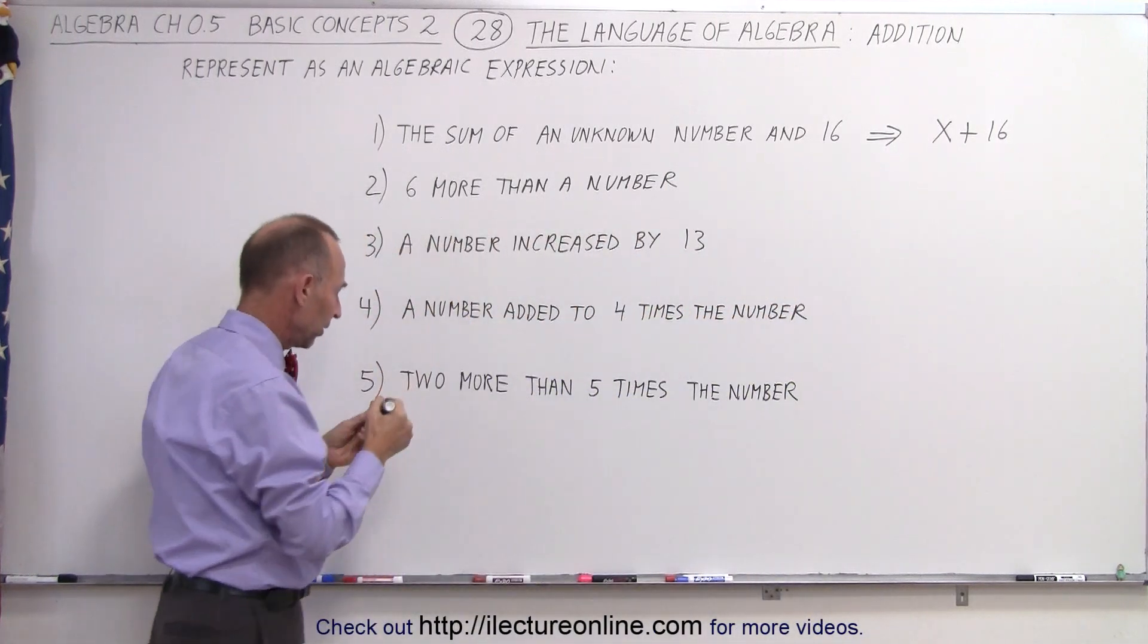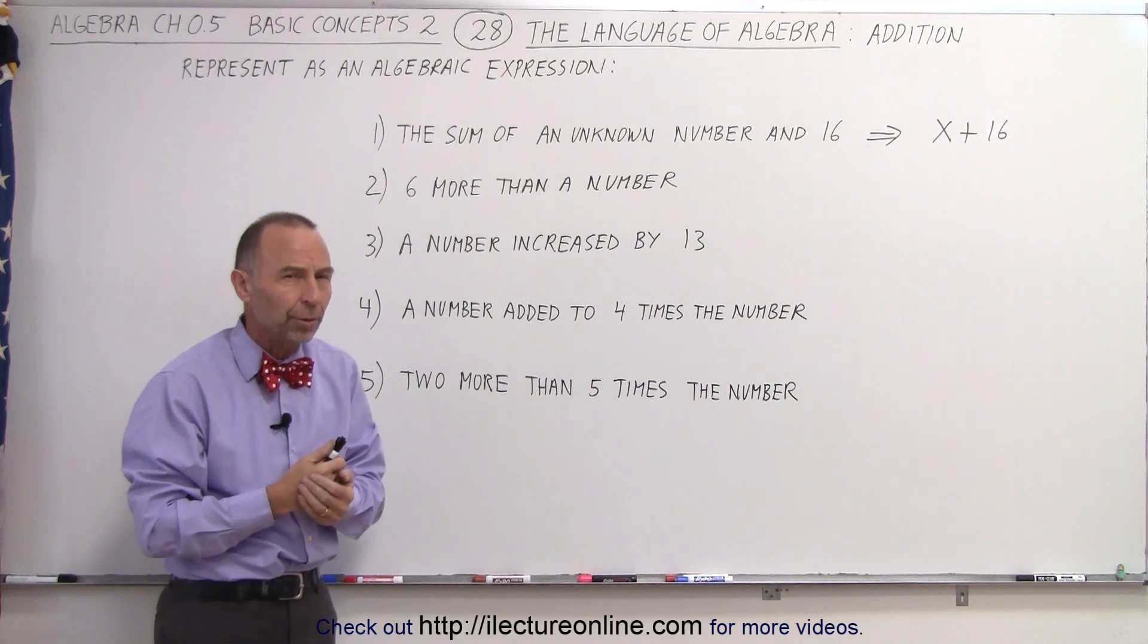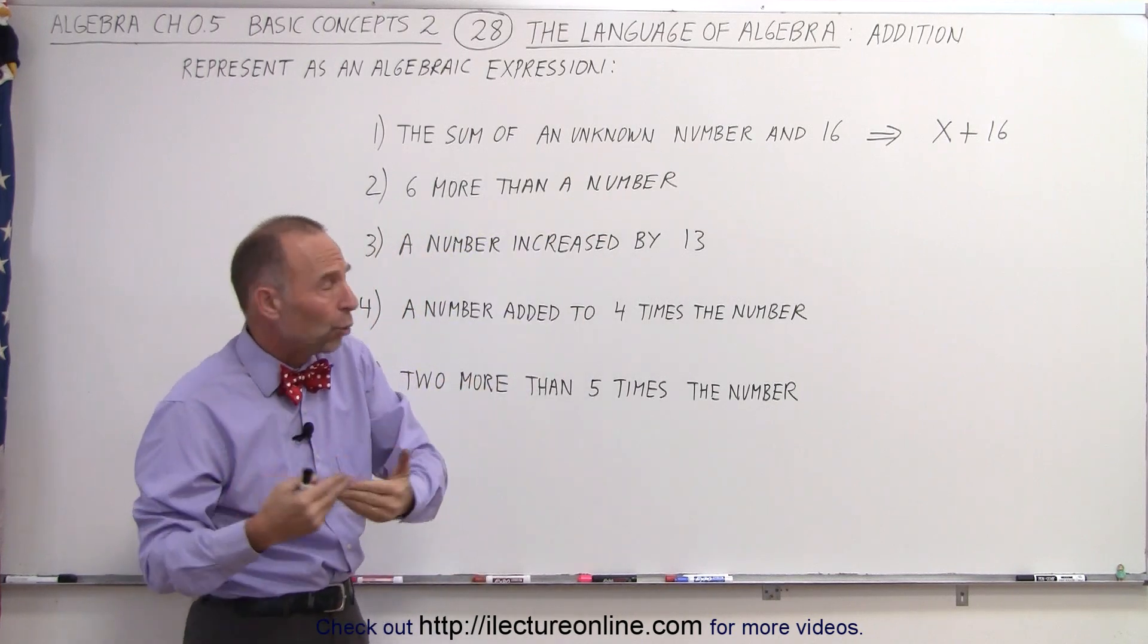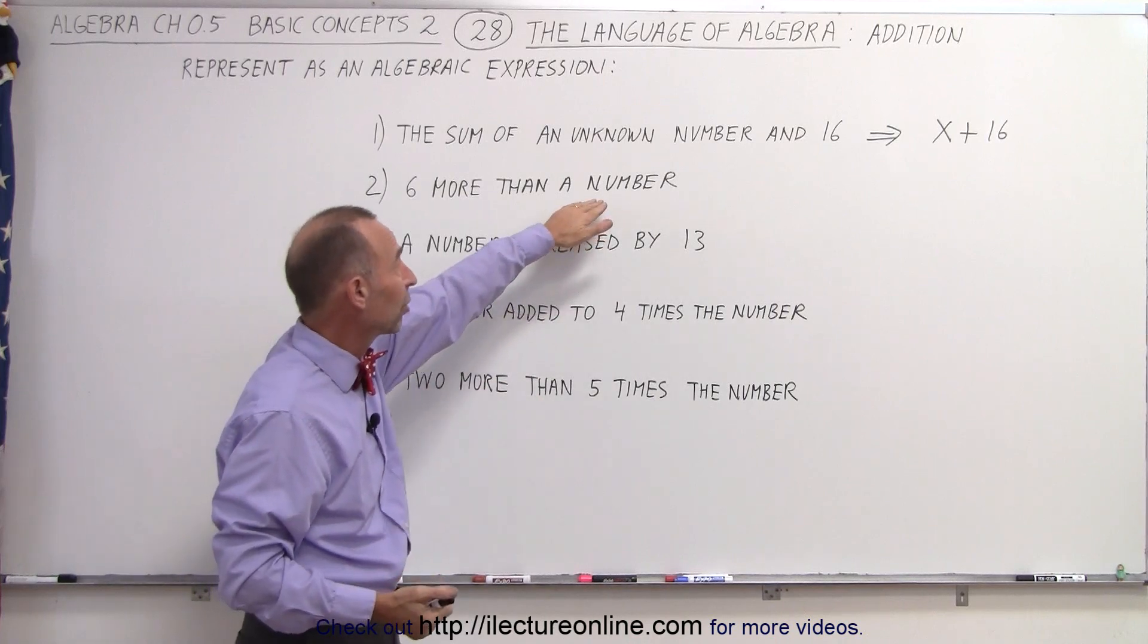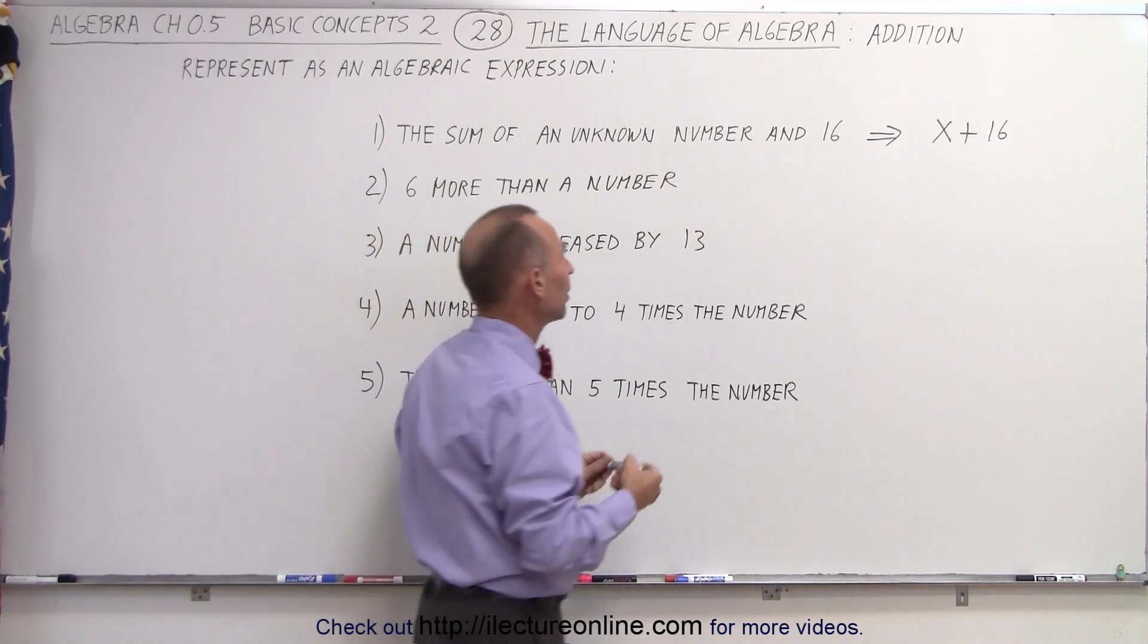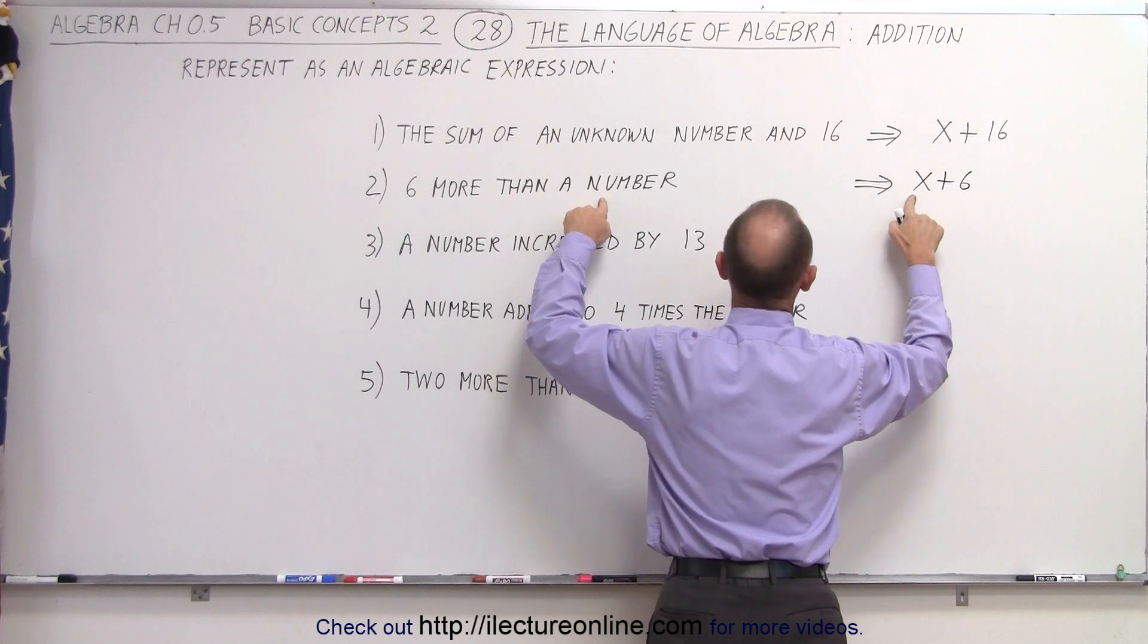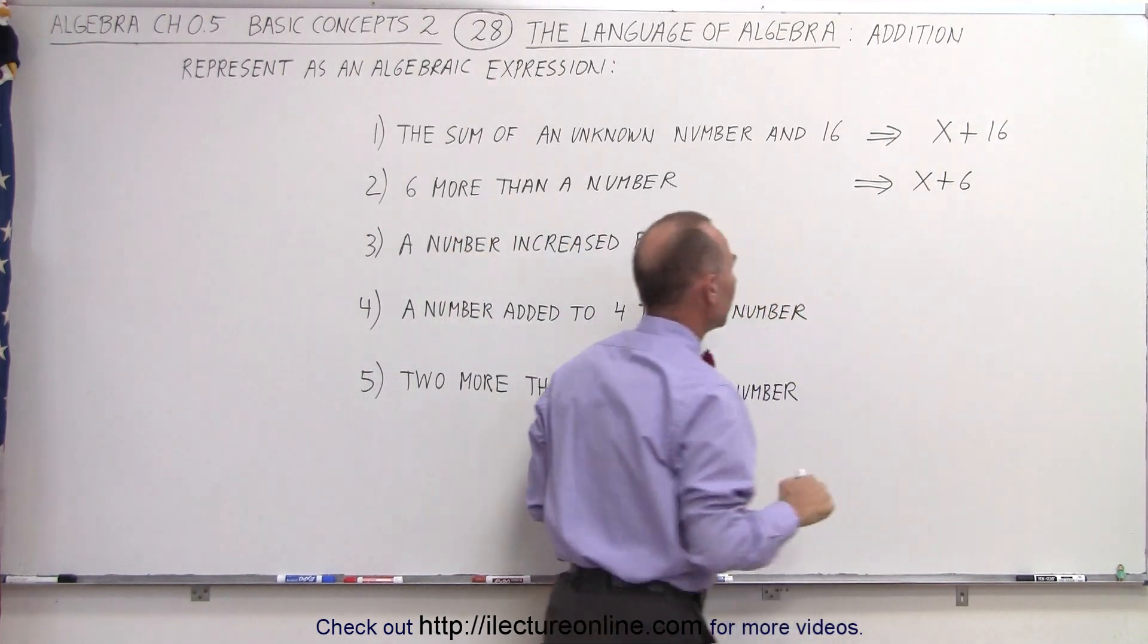Over here, we have six more than a number. More, again, implies addition. An unknown number, even though we don't say the word unknown, there's a number there, but we don't know what it is, so it is unknown. So we can call it x, and then we want to add six to that, so that expression would then be x plus 6. That means we take a number, and then we want six more than that, so we add six to that unknown number.